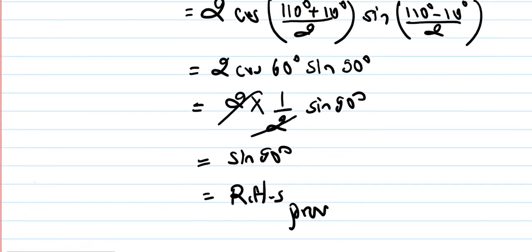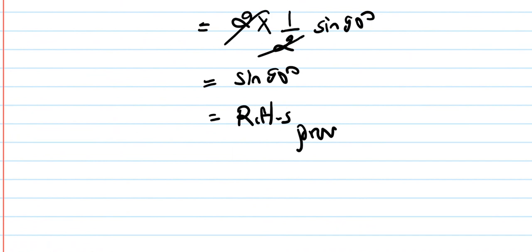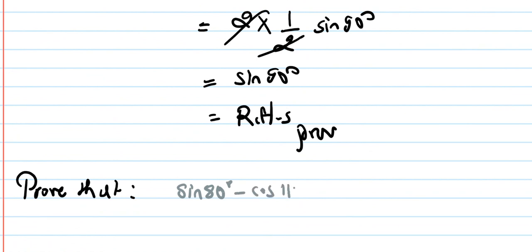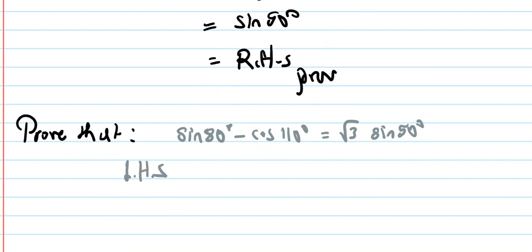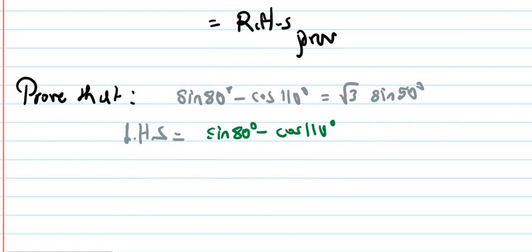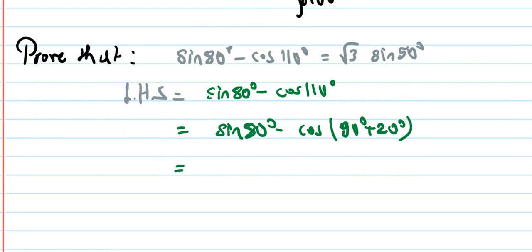Next question from 2074 regular: prove that sin80° − cos110° = √3·sin50°. LHS = sin80° − cos110°. We rewrite cos110° as cos(90° + 20°).